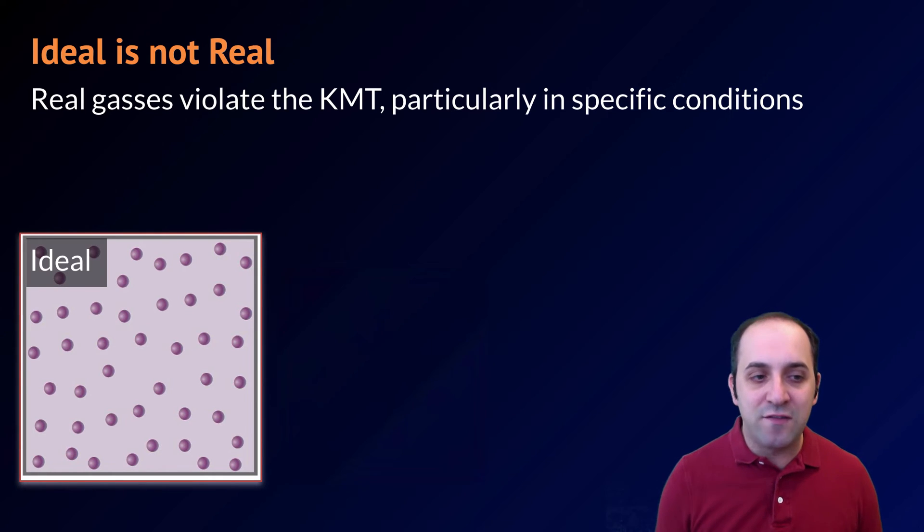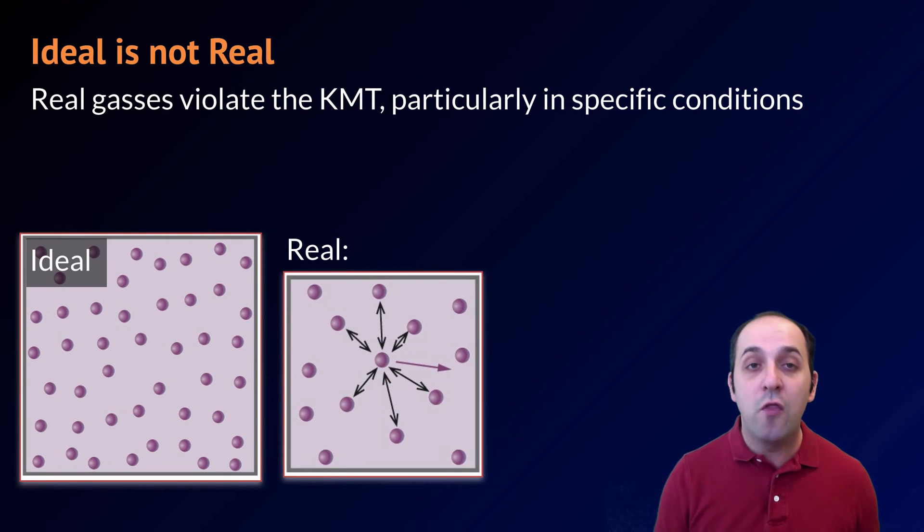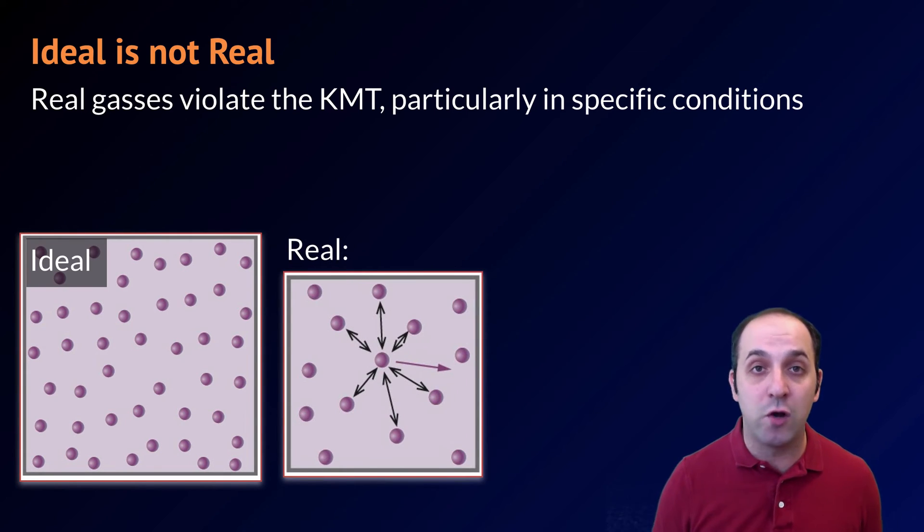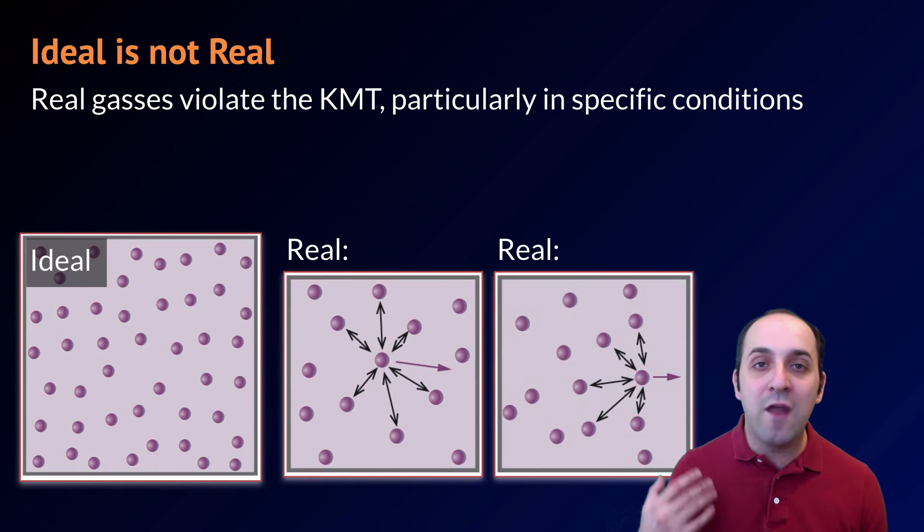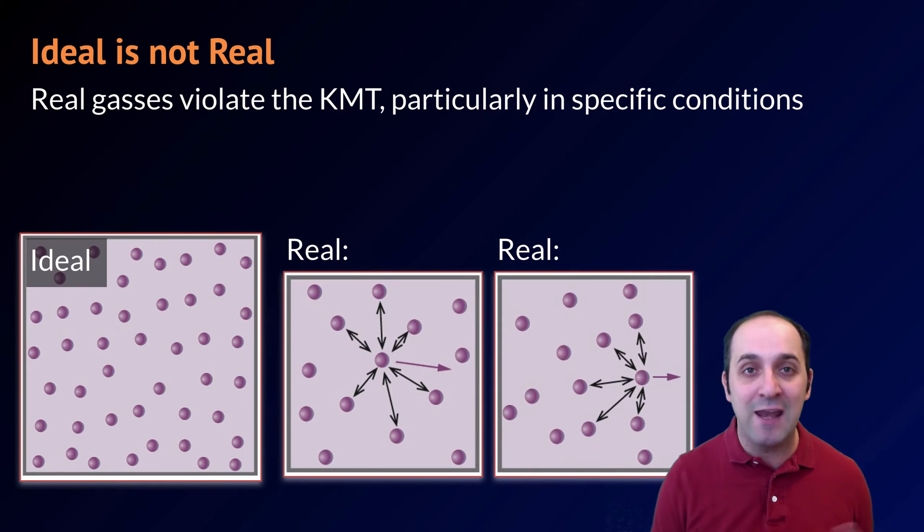To understand this, take a moment and think about what happens as you put the particles of any substance closer together. They're going to start to exhibit those intermolecular attractive forces, which is going to cause the behavior of the particles to deviate from a theoretical place where they don't have any intermolecular attractive forces at all. And of course, when the real particles of a substance hit anything, some amount of energy is lost to the larger universe. This is particularly true when there's intermolecular attractive forces pulling those particles together.